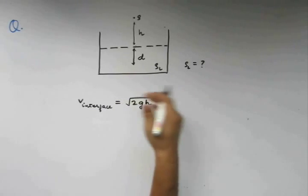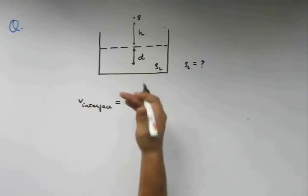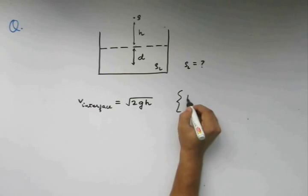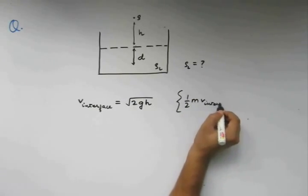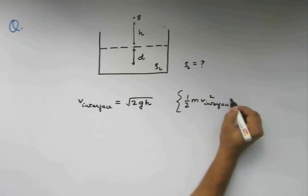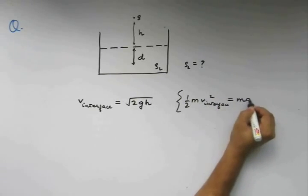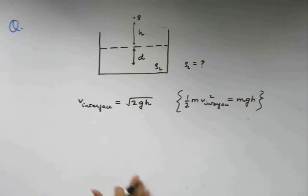This can be obtained using energy conservation which is nothing but half m v interface squared getting equal to mgh. This will give us this quantity.